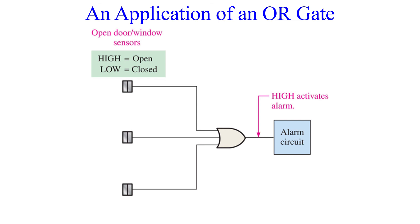However, if one or more windows is opened, as in the situation where someone may be trying to get inside, then the input goes high, creating a high output on the OR gate. This output can then trigger an alarm circuit.